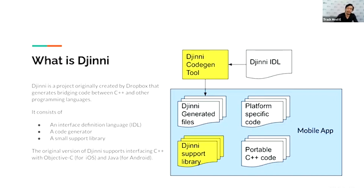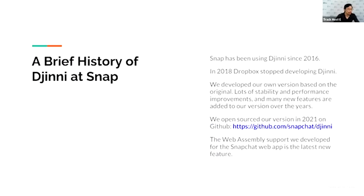The original version of Genie only supports interfacing C++ with Objective-C for iOS and Java on Android. Here's a brief history of how we use Genie at Snap. Snapchat started using Genie since 2016. In 2018, Dropbox stopped developing Genie — in fact, they stopped using C++ altogether. So we developed our own version since then, based on the original. We have added a lot of stability and performance improvements over the years as well as many new features. We open sourced our version in 2021 on GitHub. The WebAssembly support we developed for our Snapchat web app is the latest new feature.